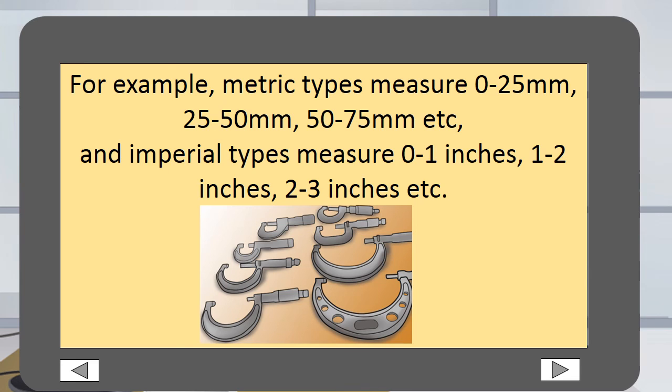For example, metric types measure 0 to 25 millimeters, 25 to 50 millimeters, 50 to 75 millimeters, and so on. And imperial types measure 0 to 1 inches, 1 to 2 inches, 2 to 3 inches, and so on.